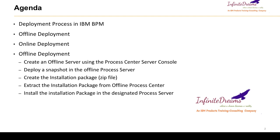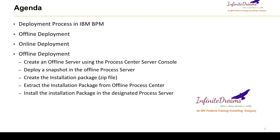For deploying to the next level of environment you can also use a build script for automation. The steps involved in offline deployment are: first, create an offline server using the process center server console; second, deploy a snapshot into the offline process server; third, create the installation package — once you deploy the snapshot, the installation package will be created automatically; then extract that installation package from the offline process center; and finally, install the installation package in the designated process server, which could be any other environment.